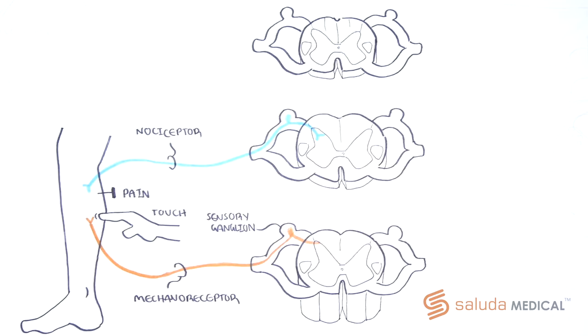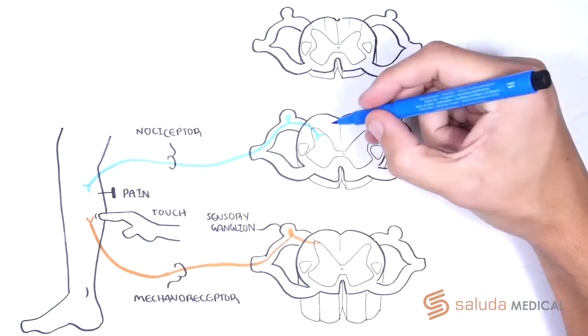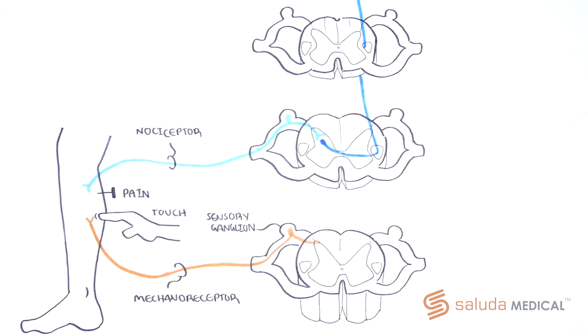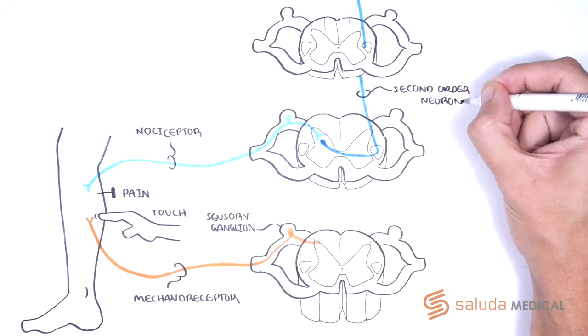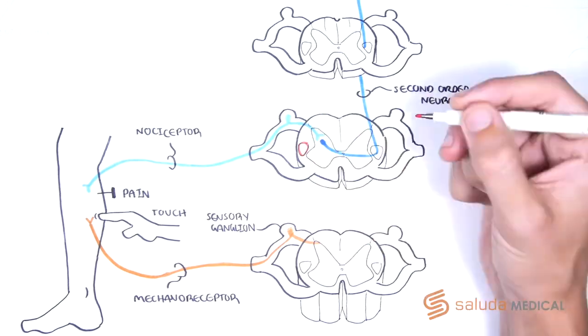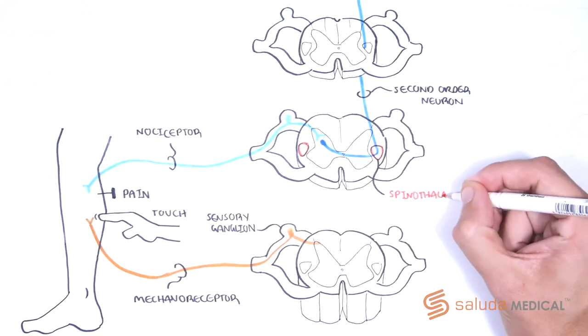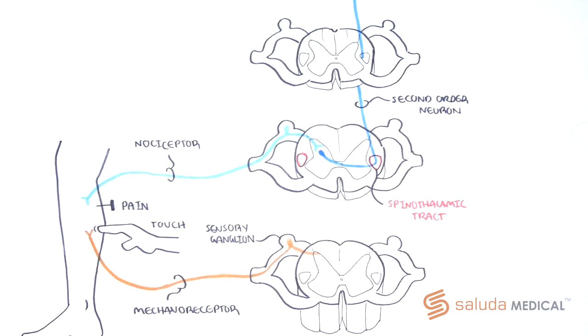Nociceptors terminate in the grey matter of the spinal cord, in the spinal dorsal horn, with synapses to second order neurons called projection cells. These projection cells cross the spinal cord and ascend in the anterolateral tracts. These are also called spinothalamic tracts. They take information to the thalamus.